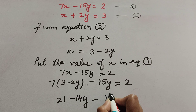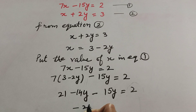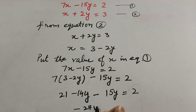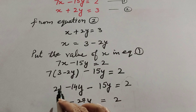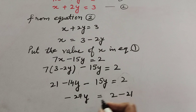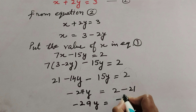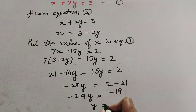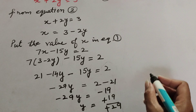Combining the y terms: -14y - 15y = -29y. So we have 21 - 29y = 2. Transposing 21 to the right hand side: -29y = 2 - 21 = -19. Therefore y = -19 / -29, which gives y = 19/29.